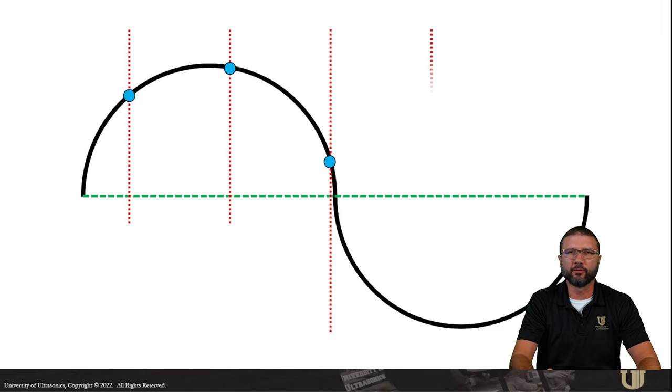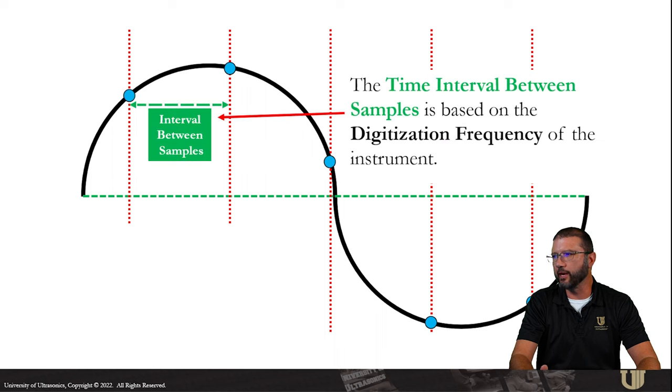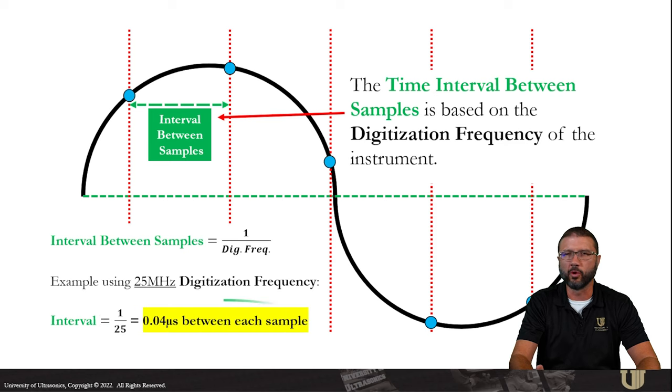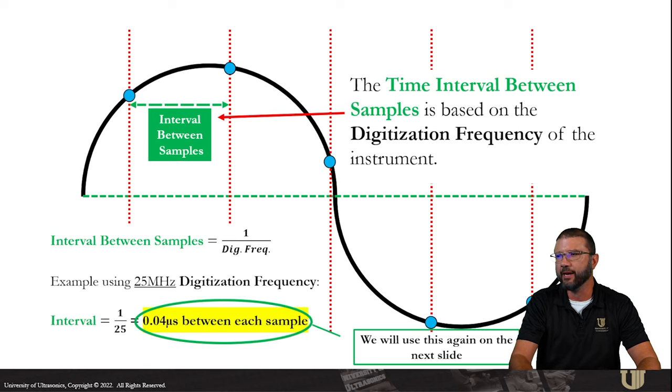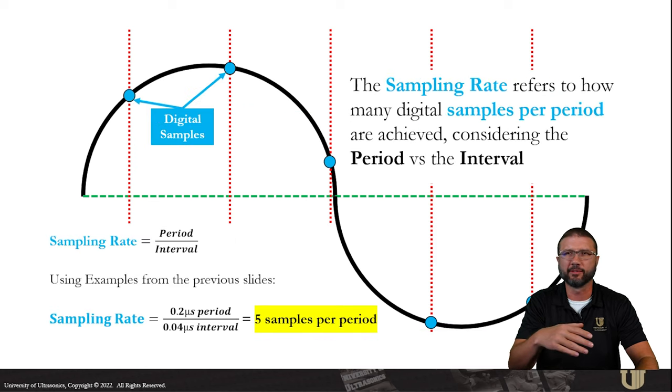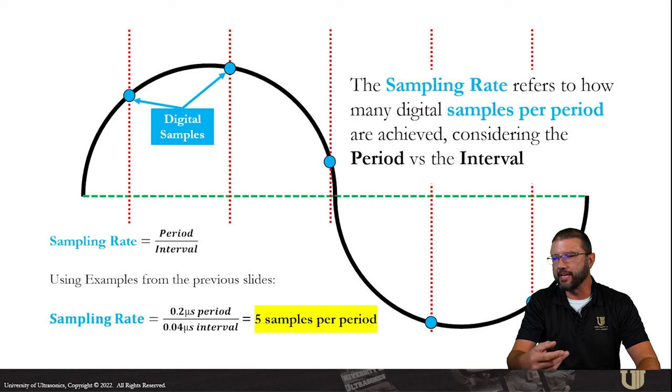Depending on the digitization frequency, we're going to grab a sample at some kind of regular interval. The formula for calculating this interval between samples is 1 divided by the digitization frequency. So if we take the example of 25 megahertz, 1 over 25 is going to tell us there's .04 microseconds in between each one of these samples. The sample rate that we refer to usually refers to how many samples per period we get. So the formula is period divided by interval. If we use examples from those previous slides, we can show that a .2 microsecond period divided by a .04 microsecond interval resulted in 5 samples per period.